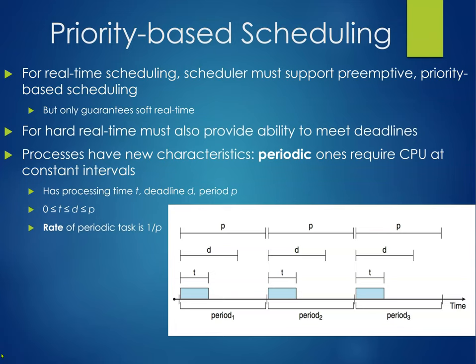For real-time scheduling, the scheduler must support preemptive priority-based scheduling, but that only guarantees soft real-time. For hard real-time, there must also be the ability to meet deadlines. Processes have new characteristics: periodic ones require the CPU at constant intervals with a processing time T, deadline D, and period P. For each period, we can only get so much work done and we have to finish it all within a given time.